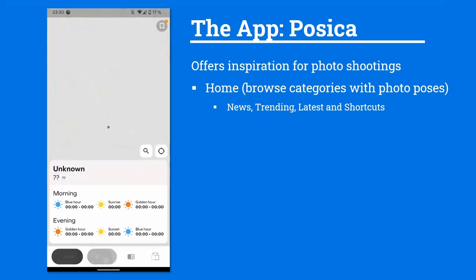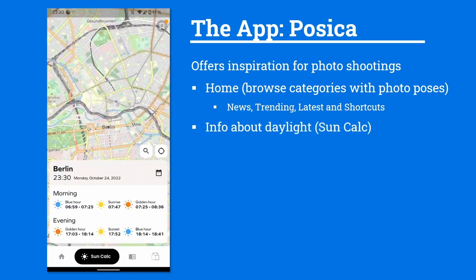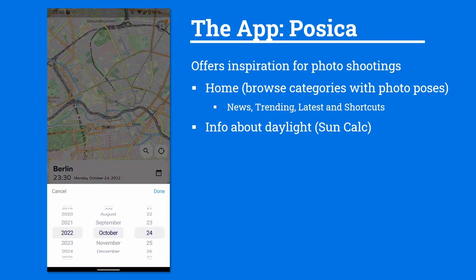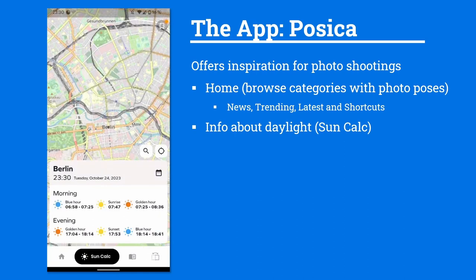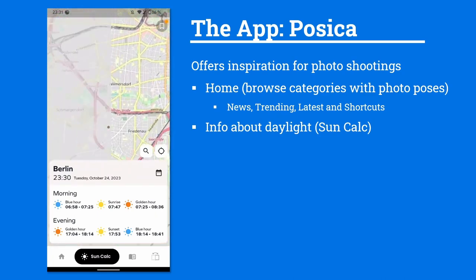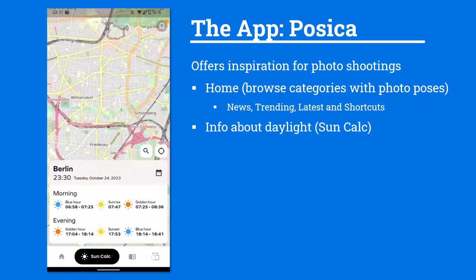Next up is the Sun Calculator. This gives you information about daylight at a certain date. For example, if you have a wedding next year you just go to 2023 and you can see the daylight in the morning, the blue hour, the sunrise, the golden hour and the evening — and this is different depending on where you are.